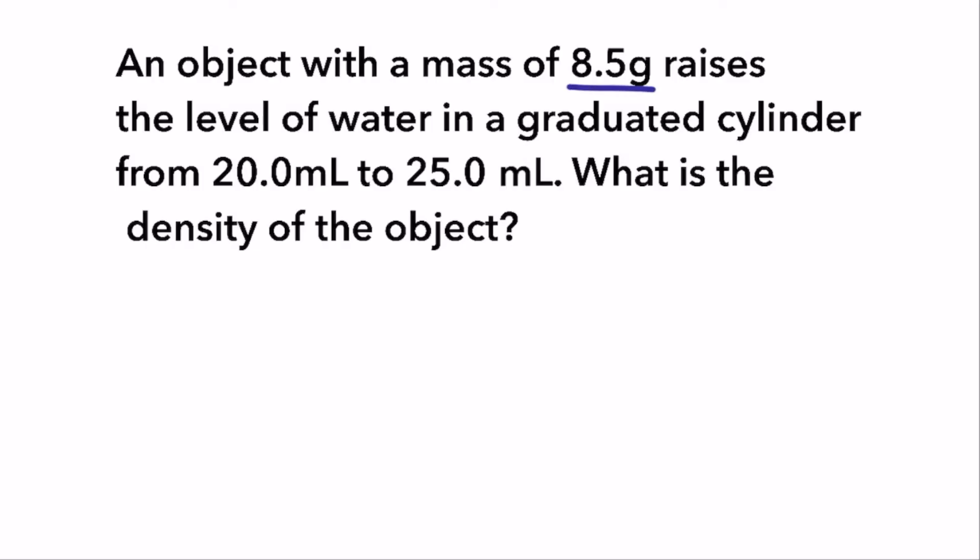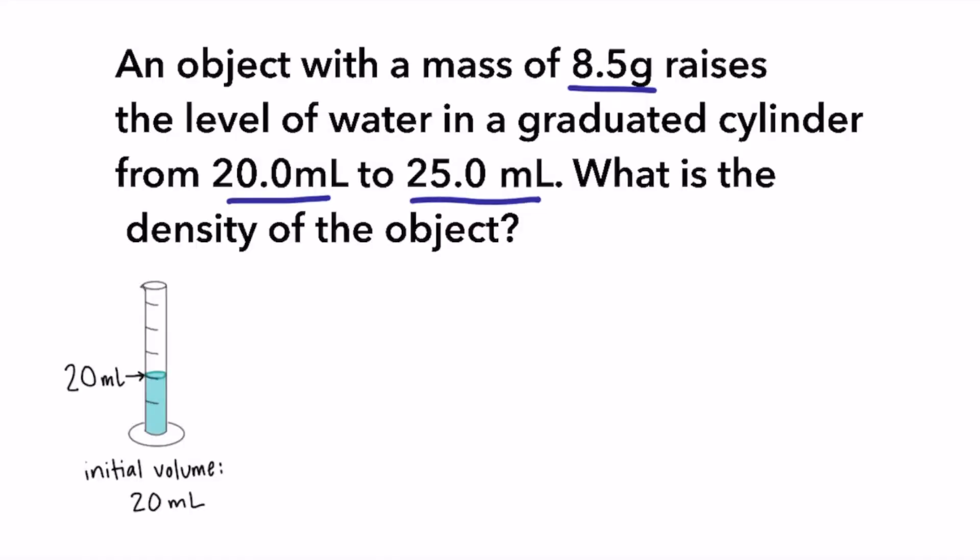An object with a mass of 8.5 grams raises the level of water in a graduated cylinder from 20 milliliters to 25 milliliters. What is the density of the object? With these kinds of problems, I like to make a little drawing to go along with it because it helps me piece together the information. Here we have 20 milliliters to start. Then the graduated cylinder with the object in it has a final volume of 25 milliliters. The volume we're going to plug in into the density formula is the difference between those two values, so 5 milliliters.